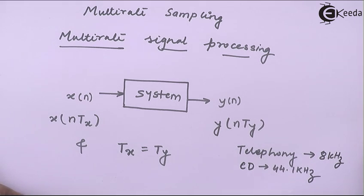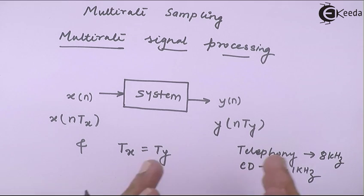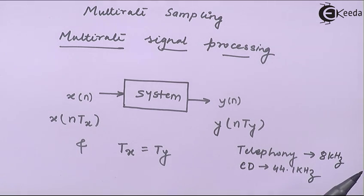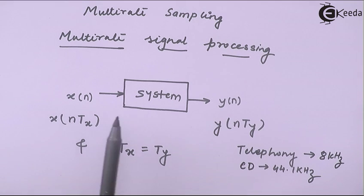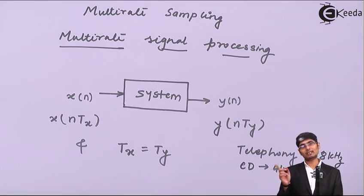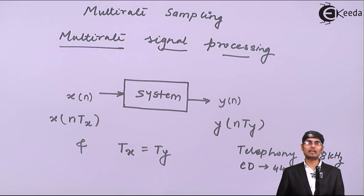That is why a need arises where the input sampling rate and output sampling rate will not be the same. I might get a speech signal at the input but want to store it on a CD, so I will up-sample that signal from 8 kilohertz to 44.1 kilohertz. Or if I am getting a CD-level signal and want to send that data over a telephone line, I have to down-sample it to 8 kilohertz.